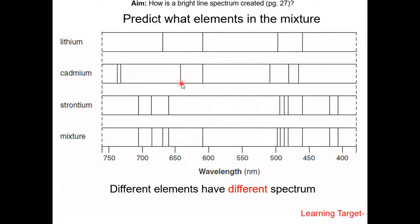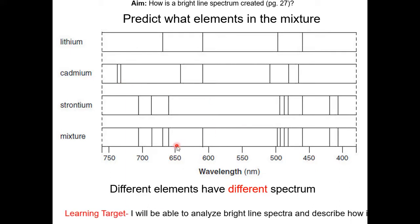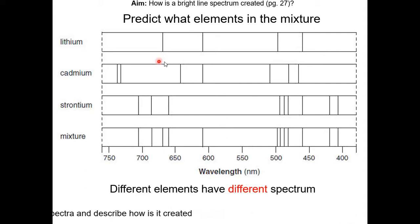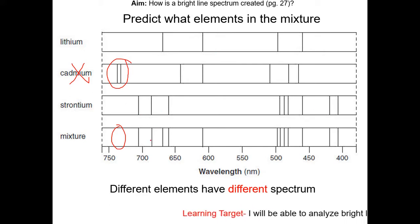Here's an example of a bright light spectrum. On the Regents, they will ask you to predict what elements are in a mixture. Keep in mind, different elements have different spectra. In order for an element to be in the mixture, all of its lines must be present in the mixture, not just one. Just match the lines and make sure all the lines of the element are in the mixture. For example, calcium has these two lines here, but we don't see them in the mixture, so calcium is not in the mixture. If we do the same for lithium and strontium, you notice that lithium and strontium are in the mixture.